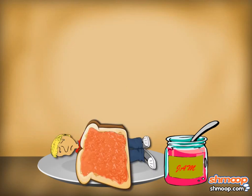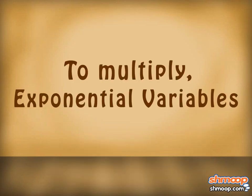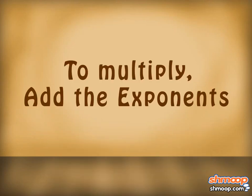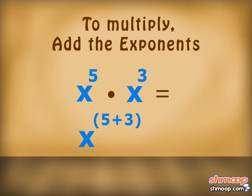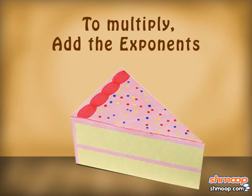Until he remembers that to multiply exponential variables, you simply need to add the exponents together. So, x to the fifth times x cubed equals x to the power of 5 plus 3, equals x to the power of 8. Piece of cake.